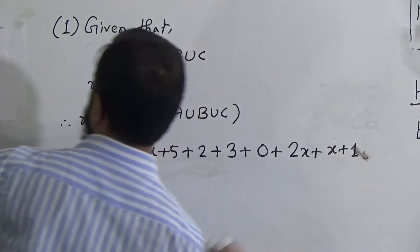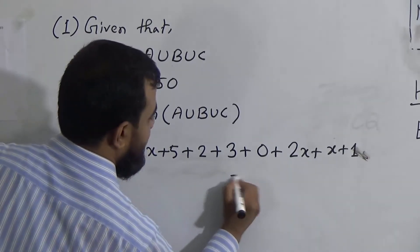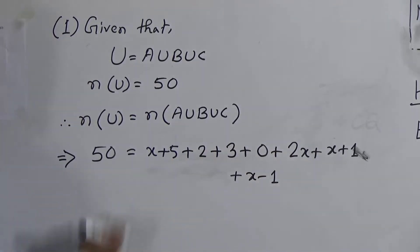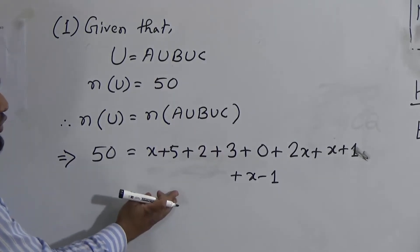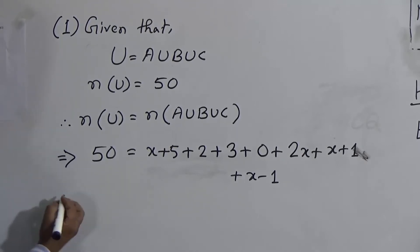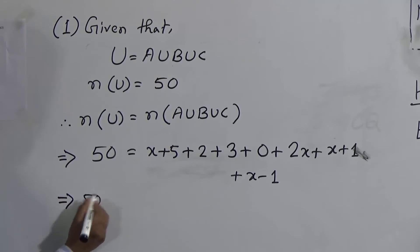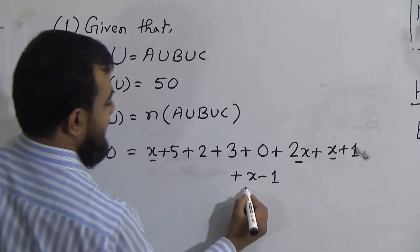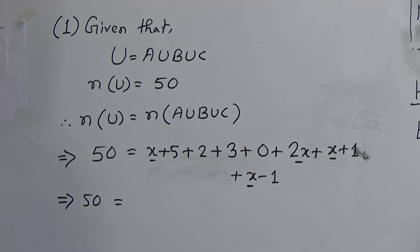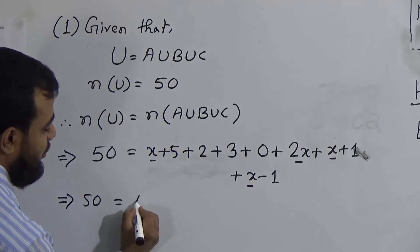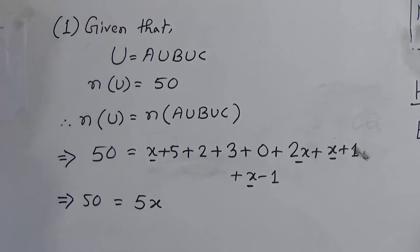So 50 equals x + 5 + 2 + 3 + 0 + 2x + (x+1) + (x−1). This is a simple calculation. In the right side we have x terms: x, 2x, x, and x — that makes 5x. Now for the constant terms with plus signs: 5 + 2 = 7, 7 + 3 = 10, 10 + 0 = 10, 10 + 1 = 11.